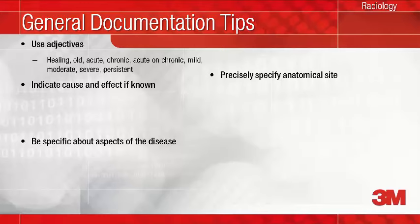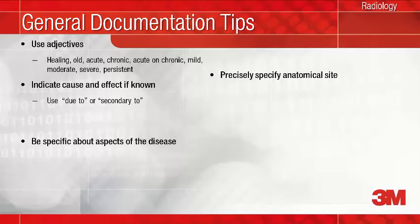Differentiate in your report whether a condition is healing, old, severe, acute, and so forth, whenever appropriate. For example, document 'healing fracture of mid-shaft of left femur.' Use 'due to' or 'secondary to' to indicate cause and effect, such as 'pathologic fracture of femur due to malignancy.' Think about the most current terminology to describe a condition or different aspects of the disease — for example, panacinar emphysema instead of emphysema when appropriate.